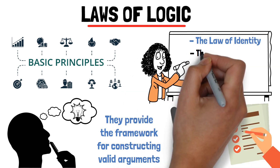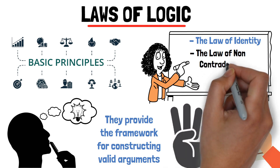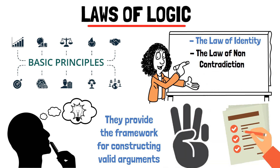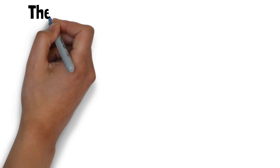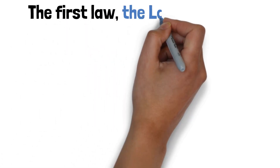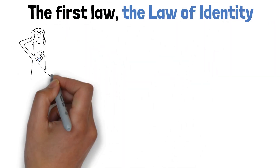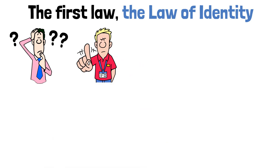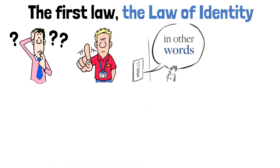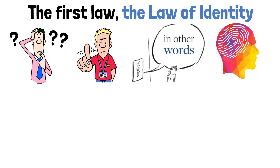The first law, the law of identity, states that a thing is what it is and not something else. In other words, everything has a specific identity that remains constant and unchanged.